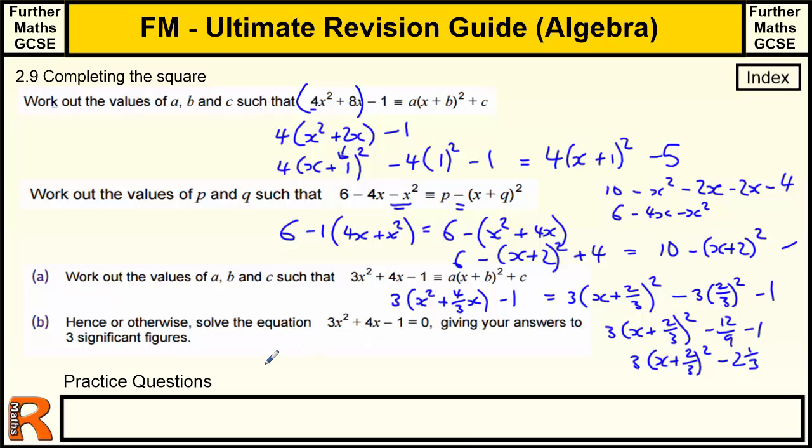Okay, hence or otherwise solve the equation. So to solve the equation, we just need to make that equal to 0. So I'll take that over to here. I've already got a lot of space here, so we'll just have to try and squeeze it in. And then we just use the same sort of method we would do in ordinary math. So we add the minus 2 and 1 third to get 2 and 1 third on this side. We divide by the 3.